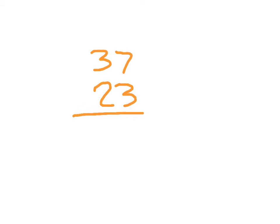We're going to learn about multiplication, so we'll put a multiplication sign there. To start with 37 times 23, we're going to look at that first number here — this 3 — and I'm going to circle it. We're going to figure out the product of 37 times 3.